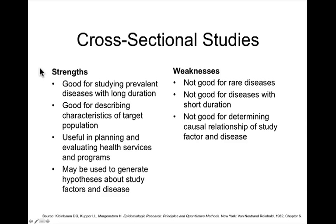Some strengths of cross-sectional studies are that they are good for studying prevalent diseases with a long duration. We can look at characteristics of the target population and ask a number of questions about them. They are often useful in planning and evaluating health services, and they can be used to generate hypotheses about study factors in disease that can then be examined using cohort and case-control studies, where we have a better chance to assess the influence of exposure over time and be more assured that exposure precedes disease. They are not particularly good for rare diseases, not as good for diseases with short duration, and they are not good for determining causal relationships, as we may not be able to confirm that exposure to the factor preceded the development of disease.